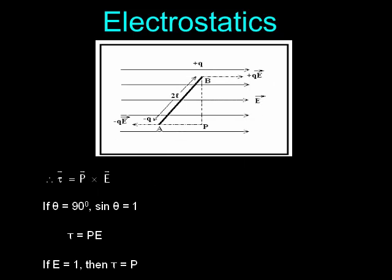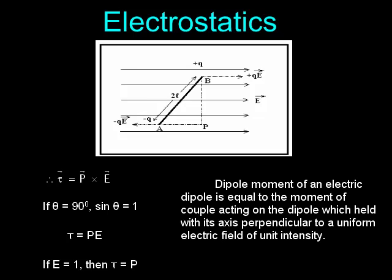Vector τ = vector P × vector E. If θ = 90°, sin θ = 1, so τ = PE. If E = 1, then τ = P. Therefore, the dipole moment of an electric dipole equals the moment of couple acting on the dipole when held with its axis perpendicular to a uniform electric field of unit intensity.